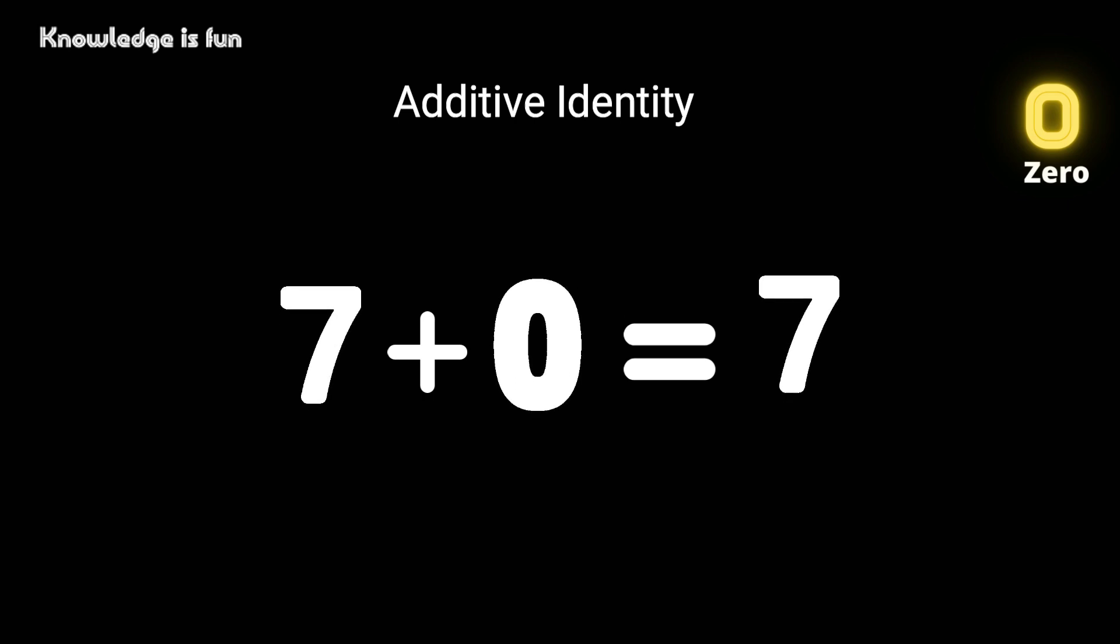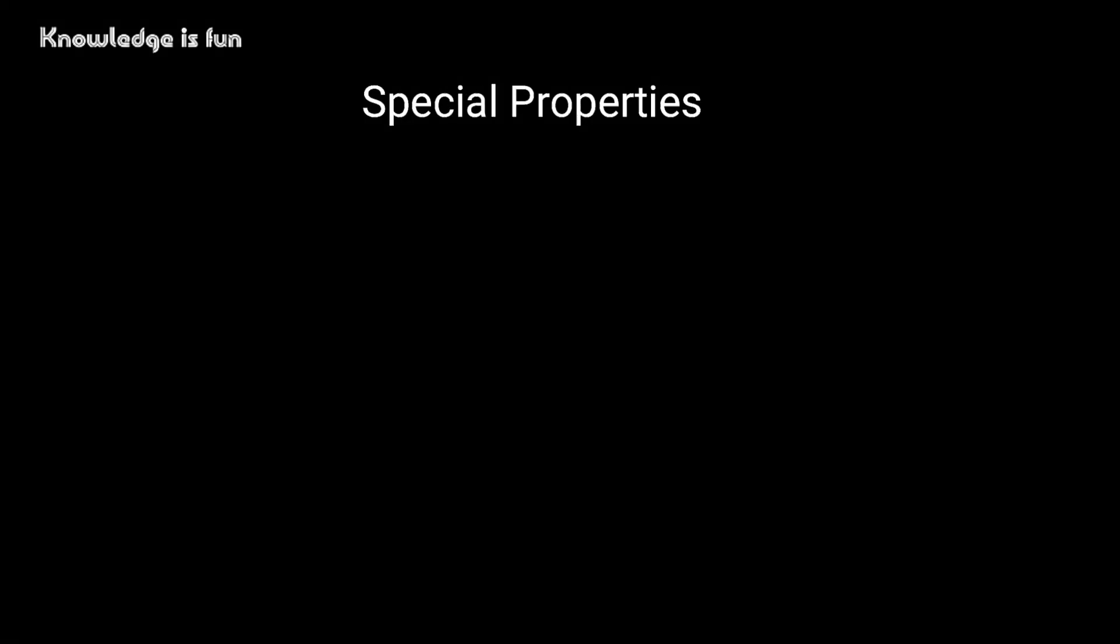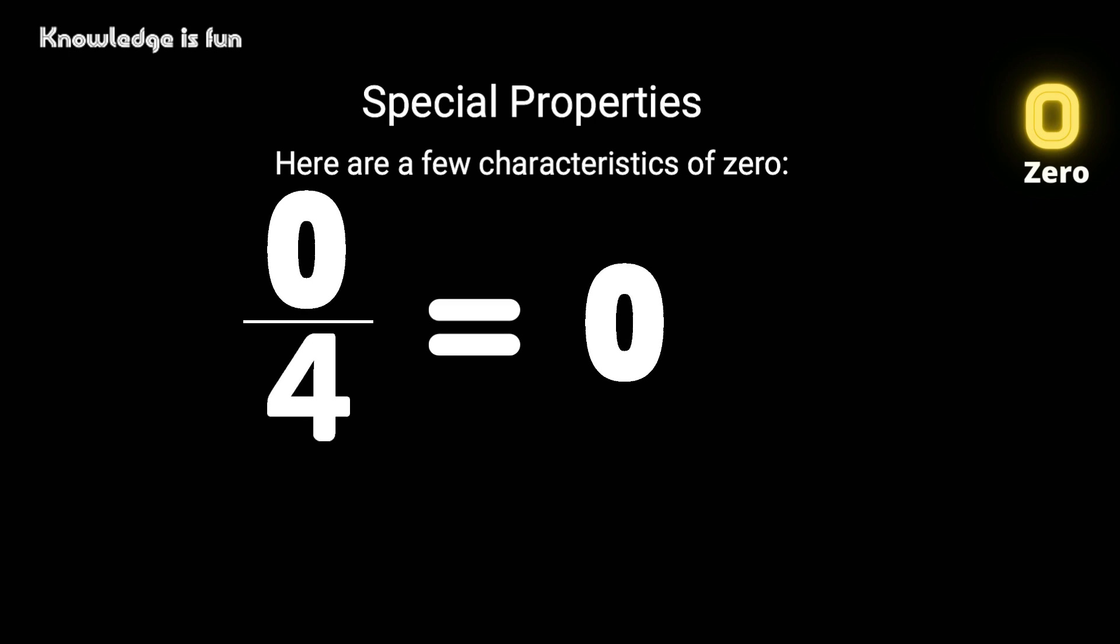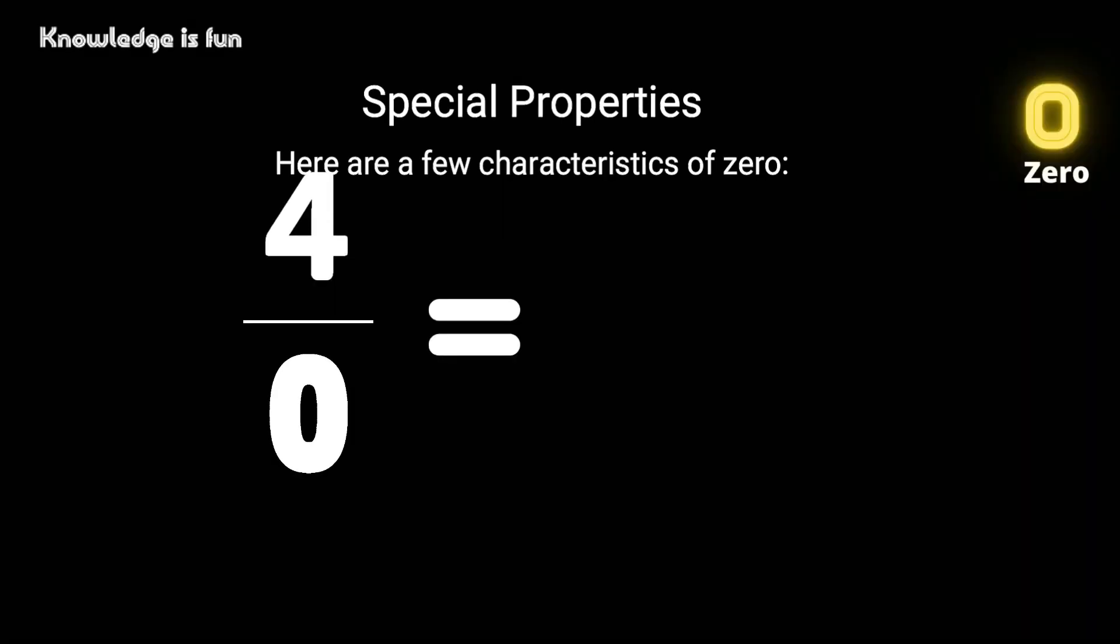Now let's look at some special properties of zero, and these will aid better understanding. When you have four plus zero, it gives you four. At the same time, when you have four subtracted by zero, it also gives you four. Four multiplied with zero gives you zero. When you have zero divided by four, it gives you zero.